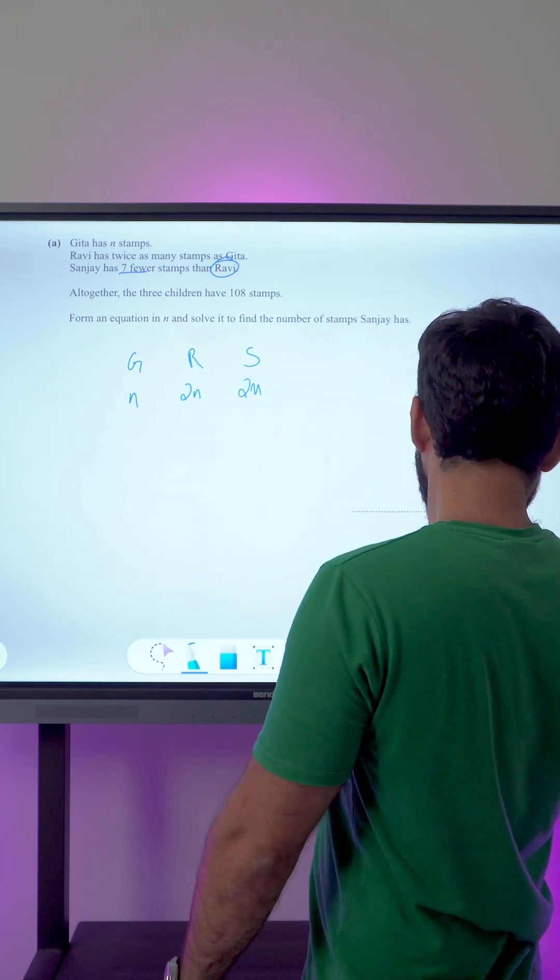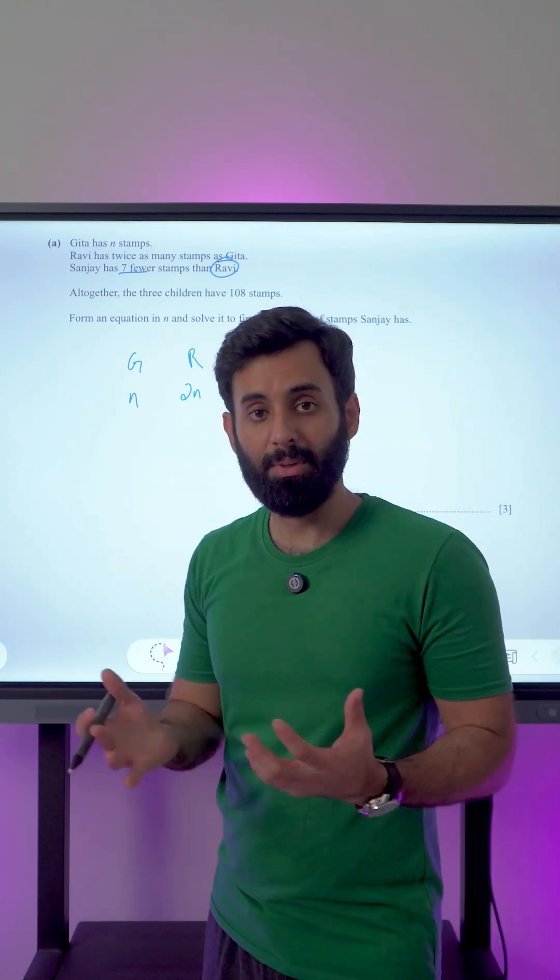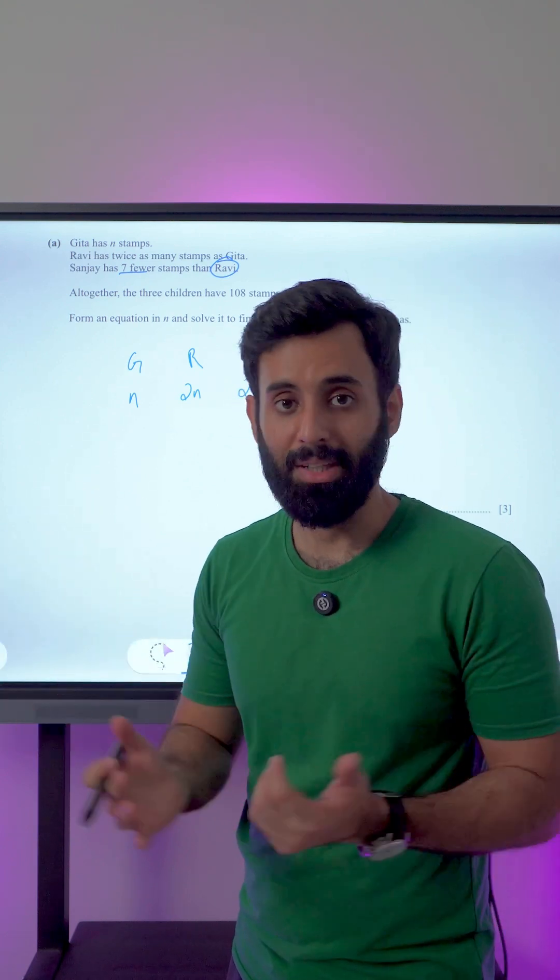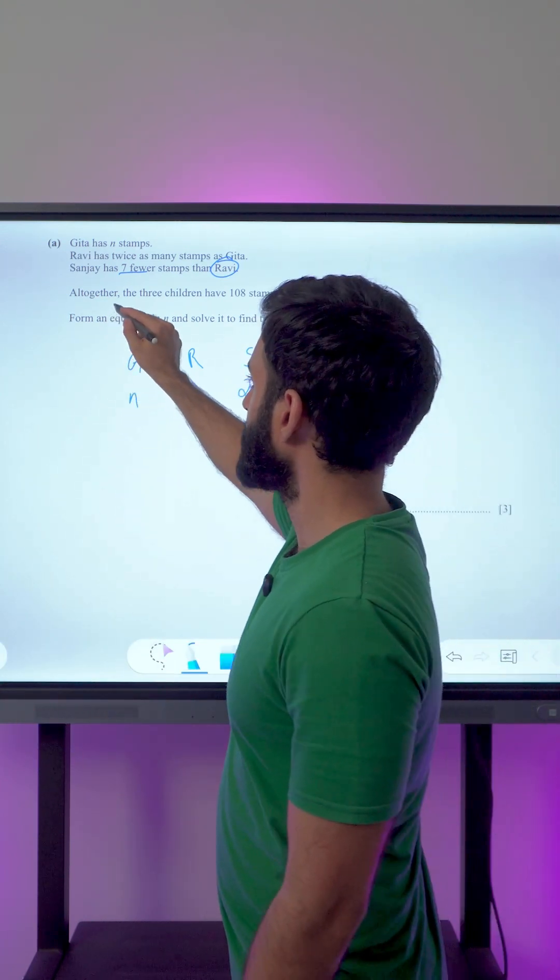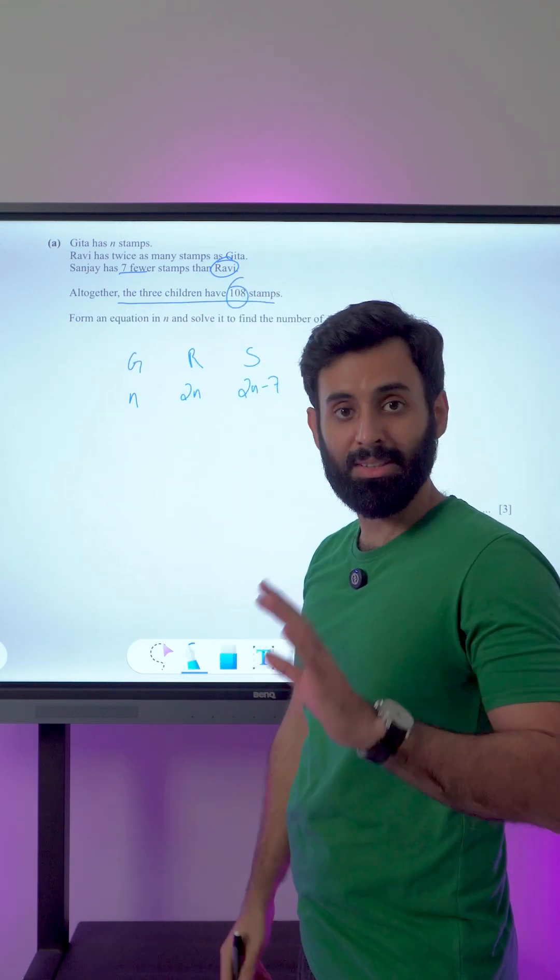Okay, now what we need is a piece of information with the help of which I can form an equation, something connecting all of them. So let's read the question further. It says altogether the three children have 108 stamps. So this is the missing piece of the puzzle which we now have.